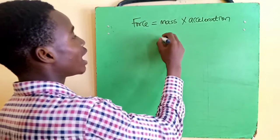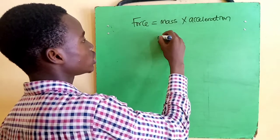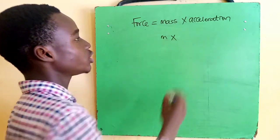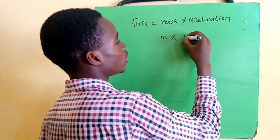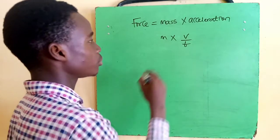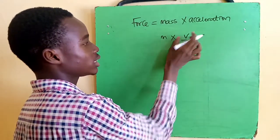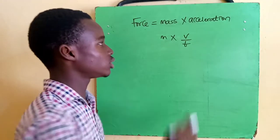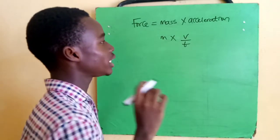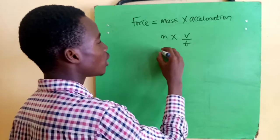So we have mass already in its fundamental quantity. We have M times acceleration, which is velocity over time. We still have velocity as a derived quantity, so we have to take velocity to its fundamental quantity.